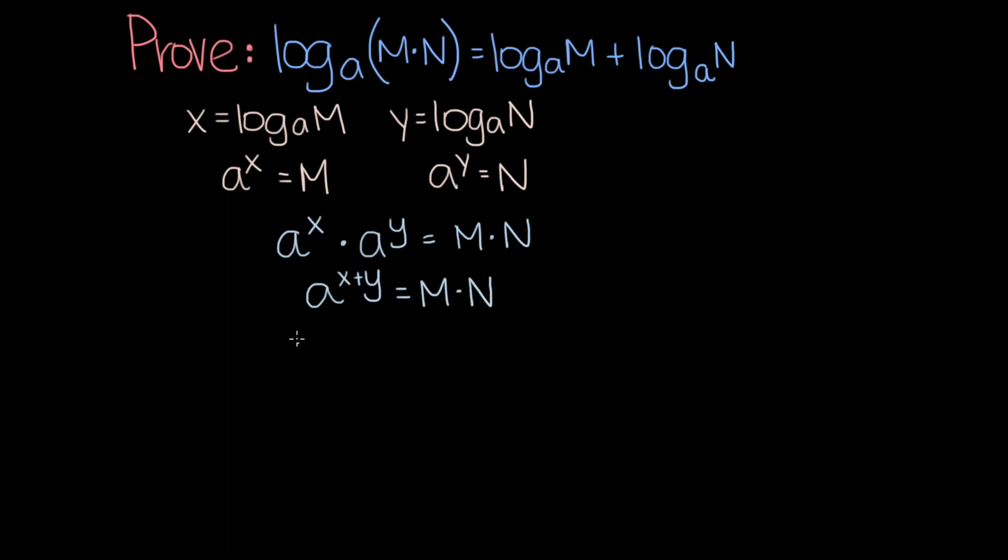Now if we take the log base a of both sides, this is what we get. The log base a of a to the x plus y is just x plus y because the power you need to raise a to to get a to the x plus y is x plus y, and this is of course equal to the log base a of m times n.